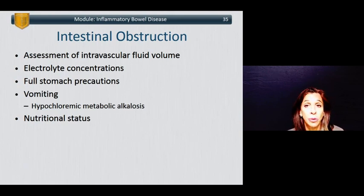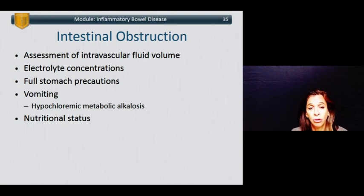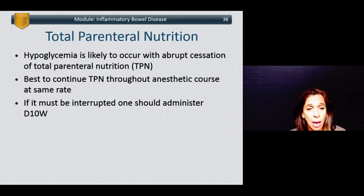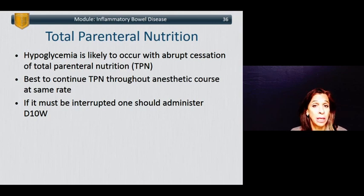In patients with intestinal obstruction, it is important to assess intravascular volume, as these patients may have had long-standing chronic diarrhea complicated by nausea and vomiting and poor PO intake. Electrolyte concentrations should be assessed and corrected whenever possible. These patients are considered full stomach and need all associated precautions. If vomiting, they may have a hypochloremic metabolic alkalosis, and their nutritional status may be compromised. Total parenteral nutrition is common in patients with GI issues, particularly inflammatory bowel disease. Hypoglycemia is likely if TPN is abruptly discontinued, so it is best to continue TPN at usual infusion rates during the anesthetic course if at all possible.